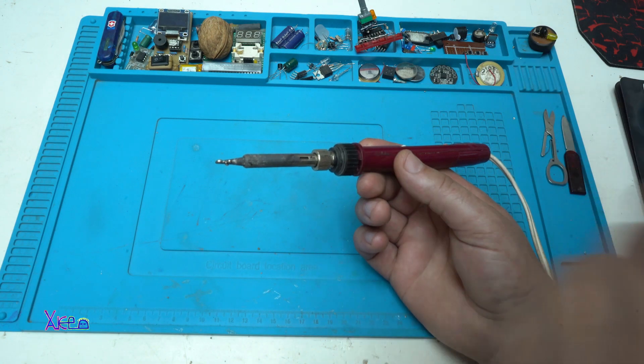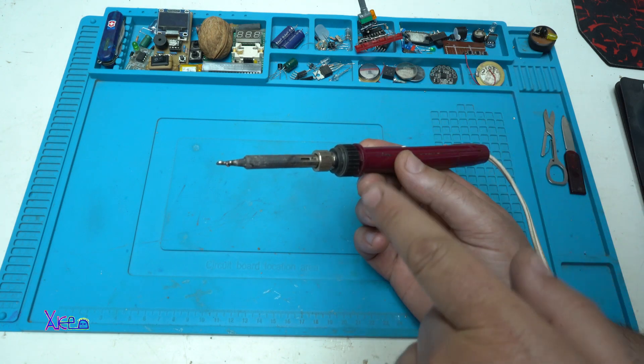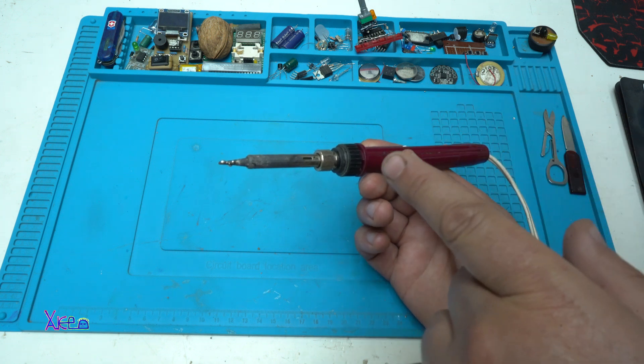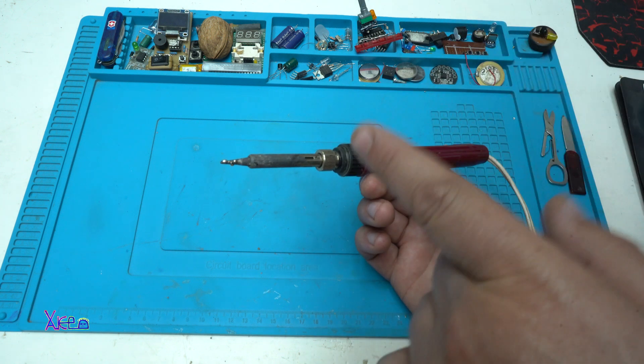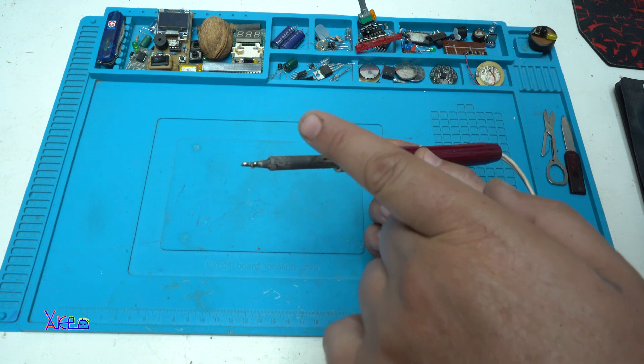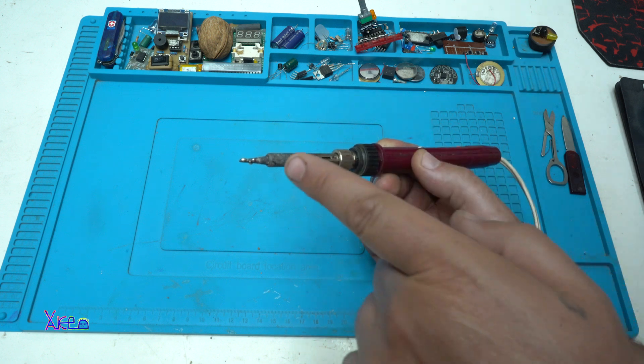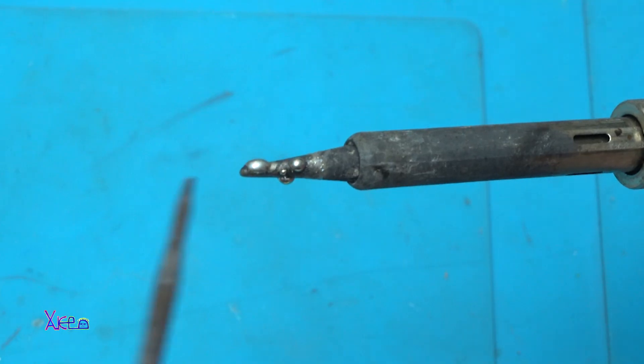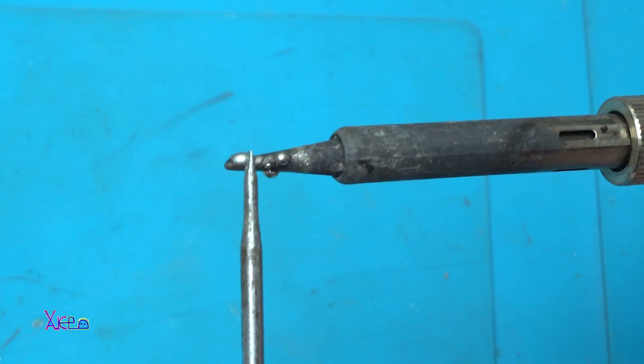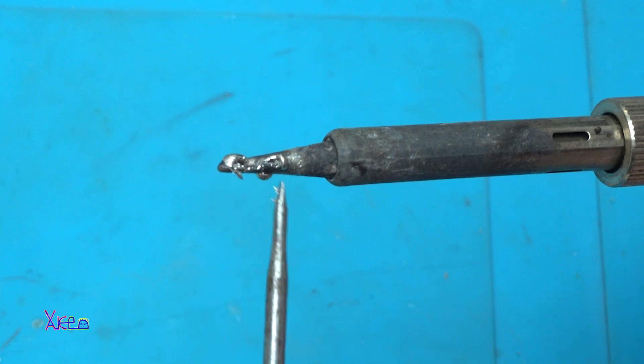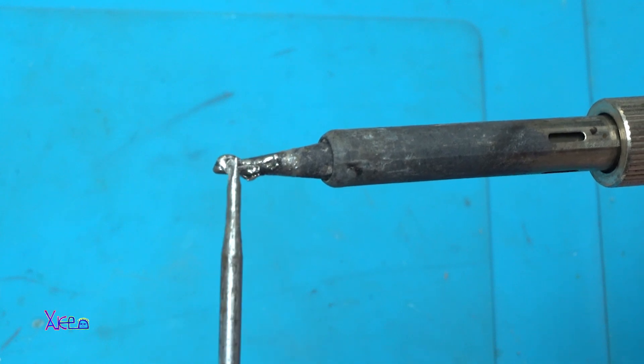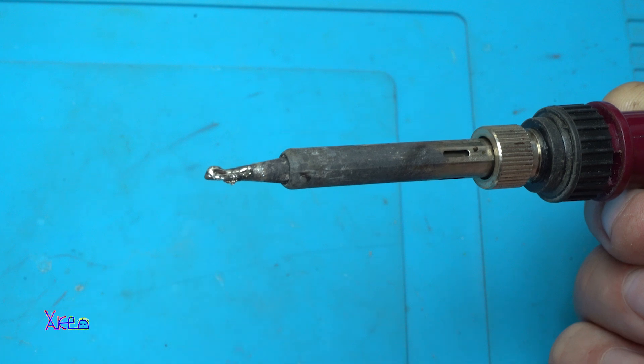The first tip or trick for me is not to have the best soldering iron. The most important thing about soldering is to have a nice and clean soldering tip. Take a look at this. You can see that the soldering tip is not clean and you cannot solder properly.